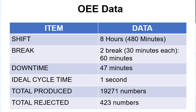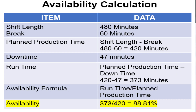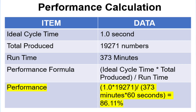Calculating Availability: The shift is 480 minutes, break is 60 minutes, so Planned Production Time = 480 − 60 = 420 minutes. Downtime is 47 minutes, so Run Time = 420 − 47 = 373 minutes. Availability = Run Time ÷ Planned Production Time = 373 ÷ 420 = 88.81%.